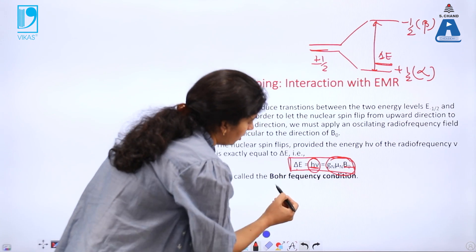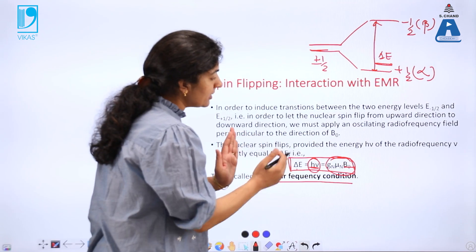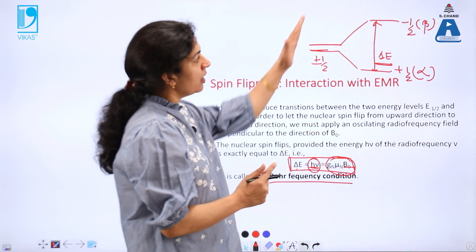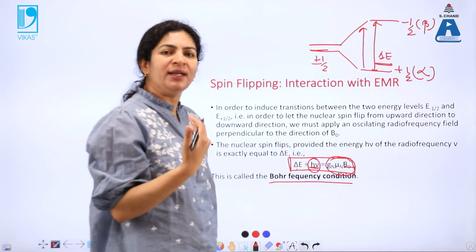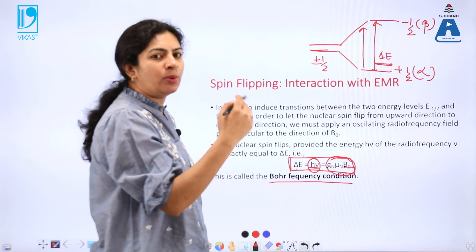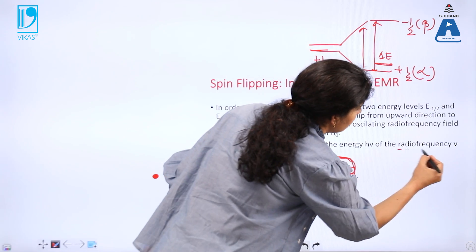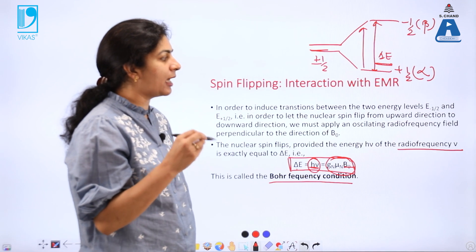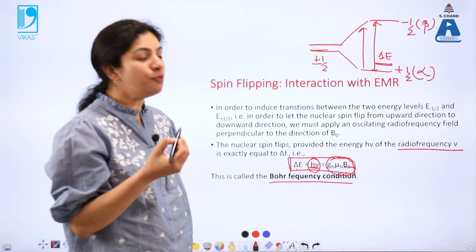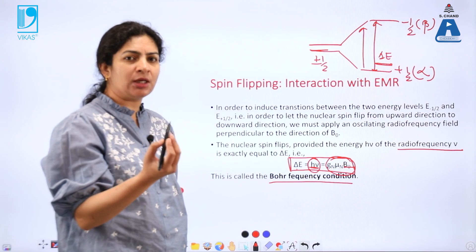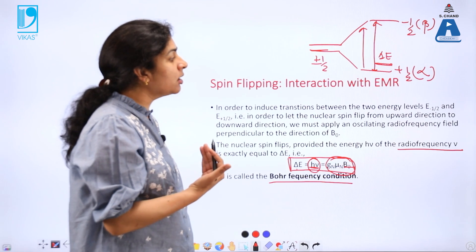This condition is also known as Bohr's frequency condition. Once the energy of the electromagnetic radiation matches this energy gap, absorption of energy takes place. This gap corresponds to radiation coming from the radio frequency region. NMR spectra of any molecule are therefore observed in the radio frequency region, just as different types of spectra originate from radiation coming from different parts of the electromagnetic spectrum.